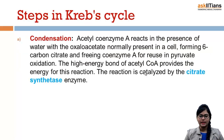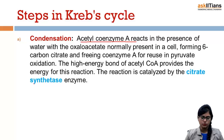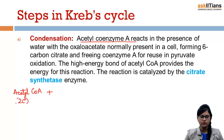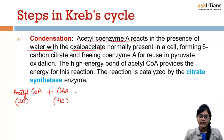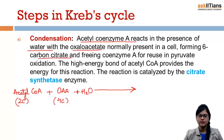The first step in the Krebs cycle is condensation. Acetyl coenzyme A, which is a two-carbon compound, reacts with oxaloacetic acid (oxaloacetate), a four-carbon compound, in the presence of water, forming a six-carbon citrate.